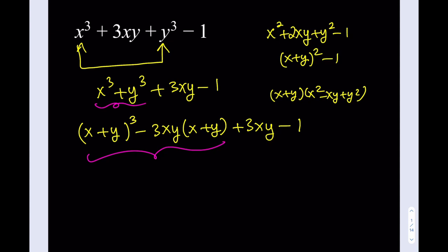So what I'm going to do is I'm going to move this stuff around a little bit. I'm going to write it this way: x plus y quantity cubed minus 1, minus 3xy multiply by x plus y, plus 3xy. Awesome.